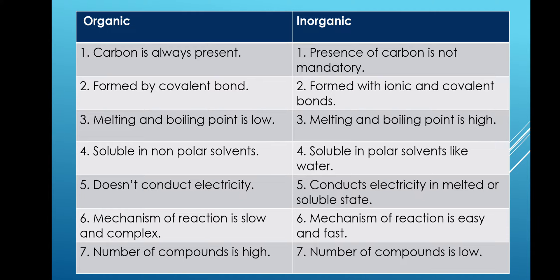The melting point and boiling point of organic compounds is low, but in comparison, the melting point and boiling point of inorganic compounds — specifically those found with ionic bonds — are very high. For example, sodium chloride or table salt has a melting point of 801 degrees Celsius, whereas methane and ethane are actually gases at room temperature.